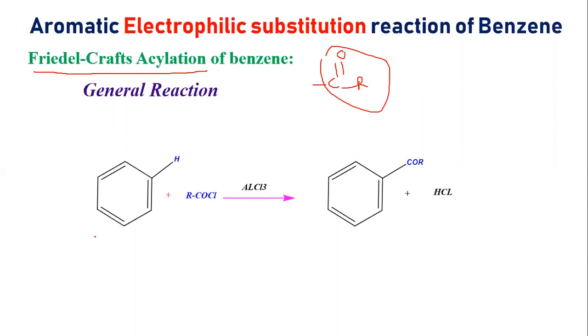What is the general reaction? The general reaction is that you have benzene ring plus acyl chloride. You can use AlCl3 or FeCl3. This group is introduced and HCl is released. This was the general reaction.